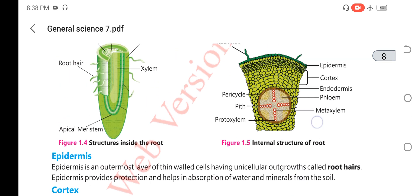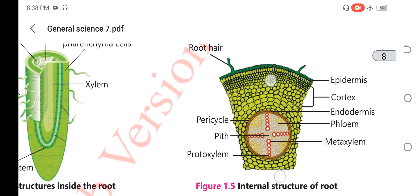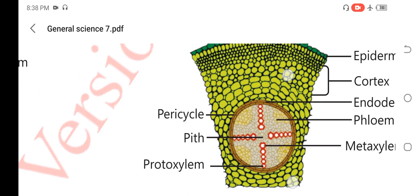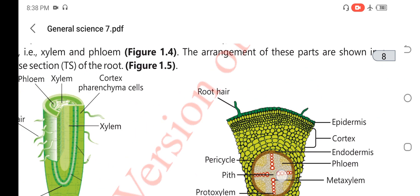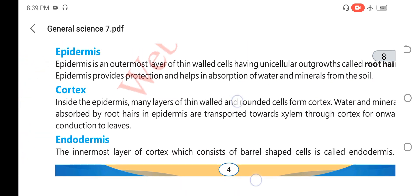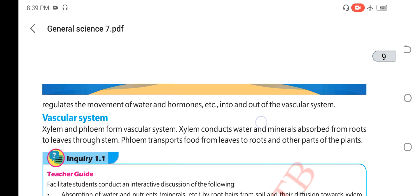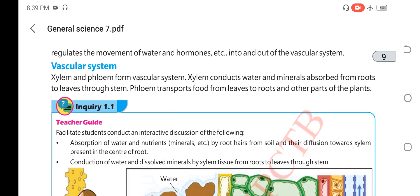Next is the vascular system. This is the vascular bundle that consists of xylem and phloem, protoxylem and metaxylem. Xylem and phloem form the vascular system. Xylem conducts water and minerals absorbed from the roots to leaves through stem. Phloem transports food from leaves to roots and other parts of the plant.